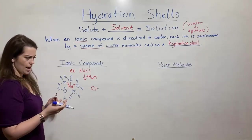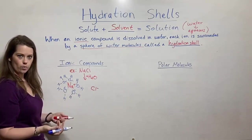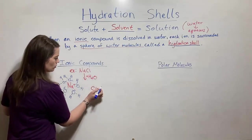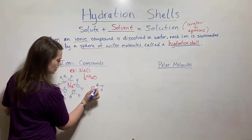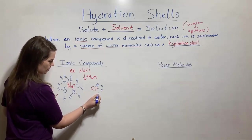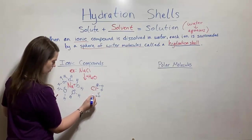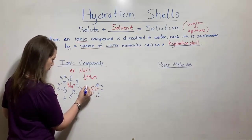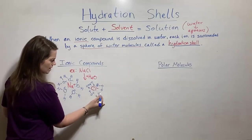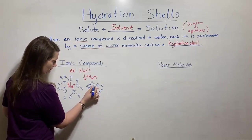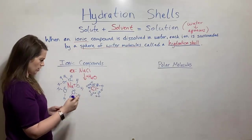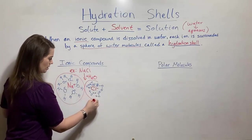With the chloride ion, it's very similar, except the chloride ion is not positively charged — it's negatively charged. So what part of the water molecule do you think is going to orient towards that negatively charged chloride ion? Well, if you guessed hydrogen, you're correct. Remember that it is the hydrogens that are partially positive, so they will have an interaction with the negative chloride ion. In all of these cases, you've got the partially positive hydrogen oriented towards the negative chloride ion. And so these structures right here are the hydration shells.